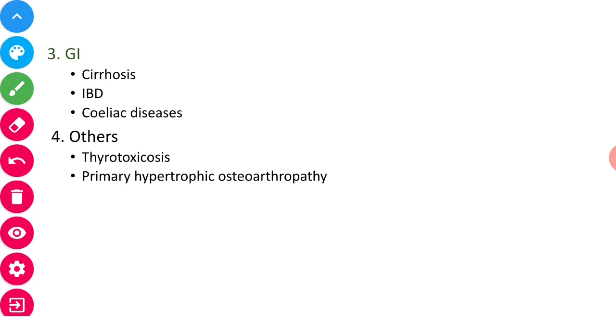Now let's talk about GI. GI causes include malabsorption syndromes, celiac disease, cirrhosis, inflammatory bowel disorders. And some others also like thyrotoxicosis and primary hypertrophic osteoarthropathy. Remember in clubbing three systems are involved: thoracic, cardiovascular and GI.